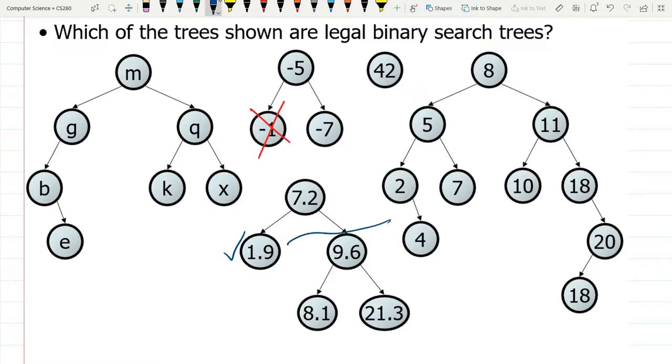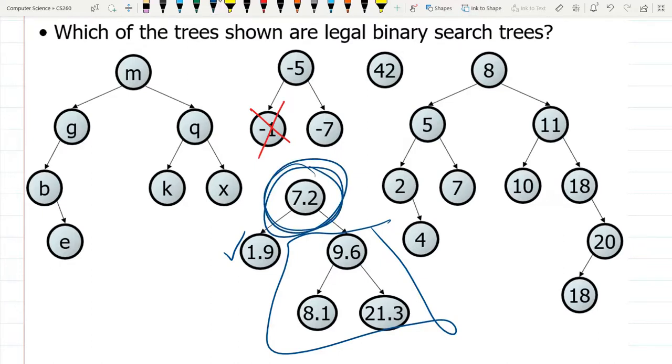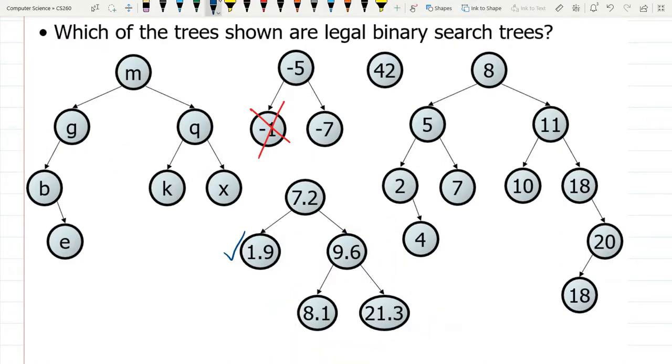Let's now look to the right. So 7.2 is the root node. Is everything to the right, all these three nodes, are they all greater than 7.2? So far, this is a valid tree.